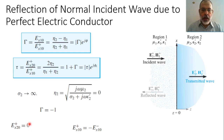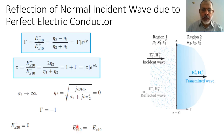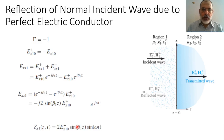Since tau equals 0, the reflected electric field amplitude EX1(0-) would be gamma multiplied by the incident field, so it would be minus EX1(0+). The total field in the transmitted region, region 2, would be 0.